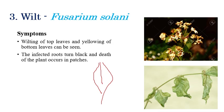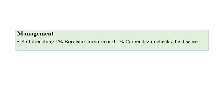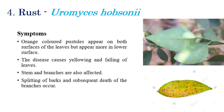Wilt is caused by Fusarium solani. Symptoms include wilting and the top of the leaves getting wilted, along with yellowing of leaves. Initially green leaves slowly turn pale green, then yellow in later stages. Drooping of leaves and death of plant parts occurs. Blackening of plant parts and death of the plant also occur in later stages. Soil drenching with 0.1 percent Bordeaux mixture or 0.1 percent Carbendazim can manage this disease.